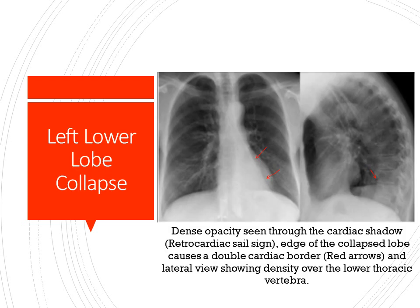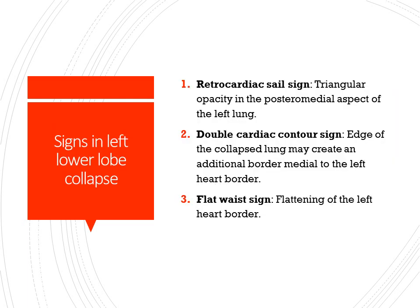On the X-ray of left lower lobe collapse, you can see the shadow in the posterior aspect behind the heart. There is a double line — this is the cardiac border and this is the collapse border — called the double contour sign. The lateral view shows density over the lower thoracic vertebrae. Notable signs in left lower lobe collapse include: the retrocardiac sail sign (triangular opacity in the posterior aspect of the lung behind the heart), the double cardiac contour sign (edge of the collapsed lung creating an additional border medial to the left heart border), and the flat waist sign (flattening of the left heart border).